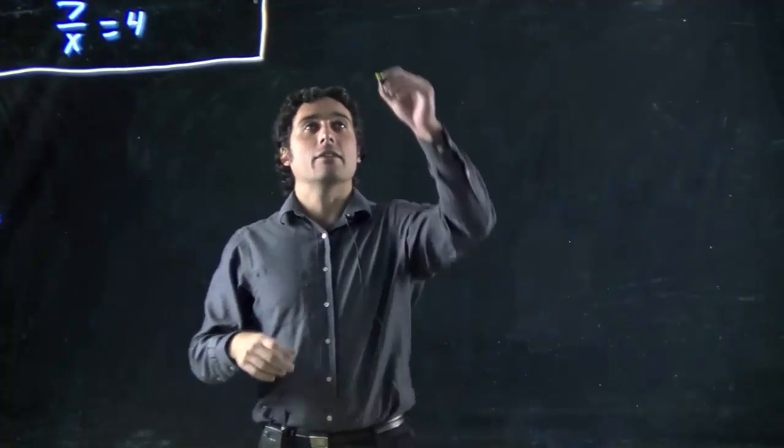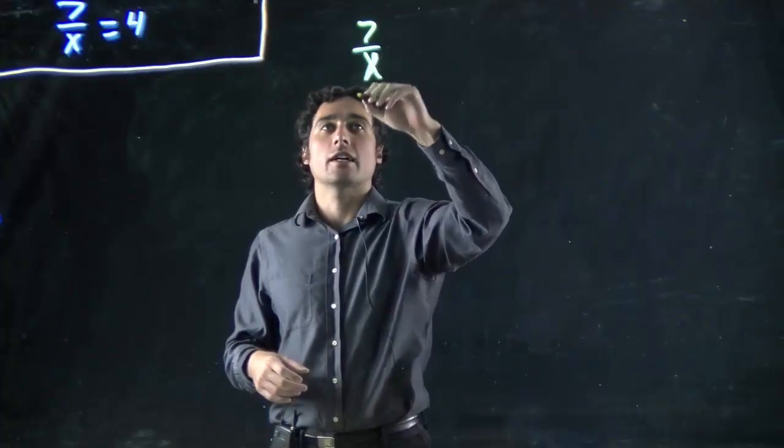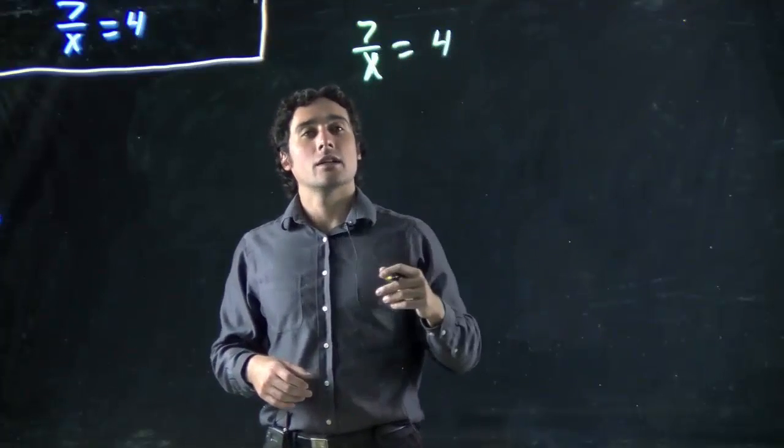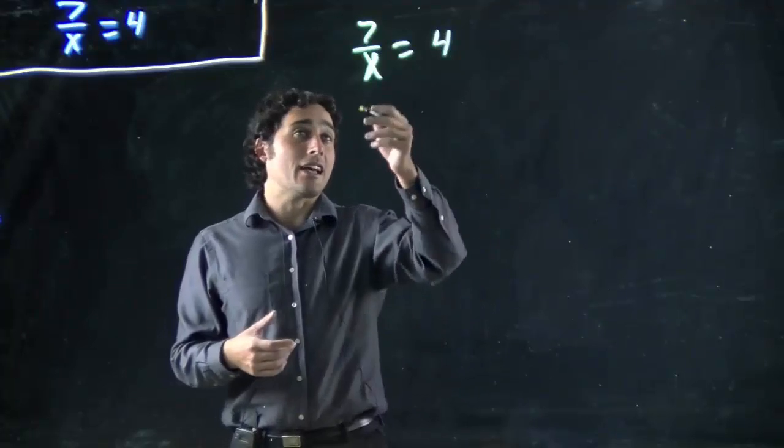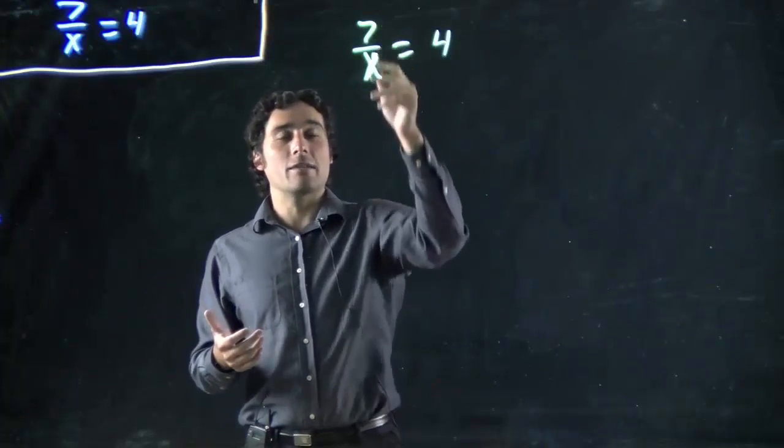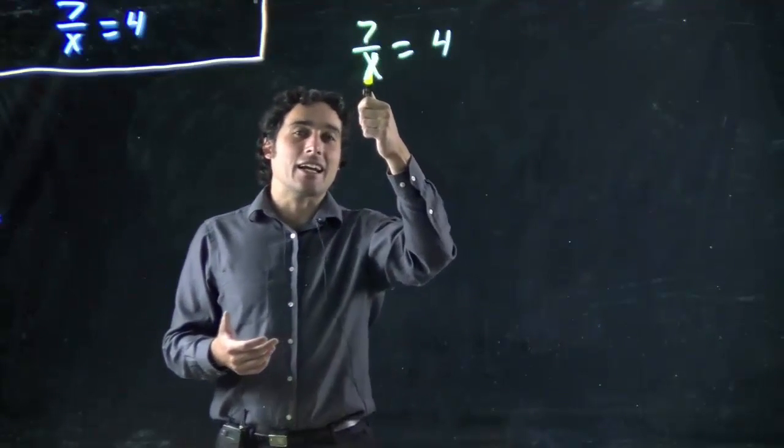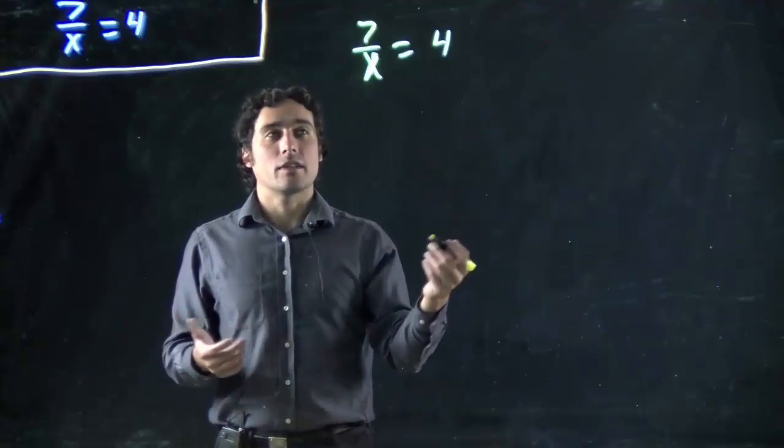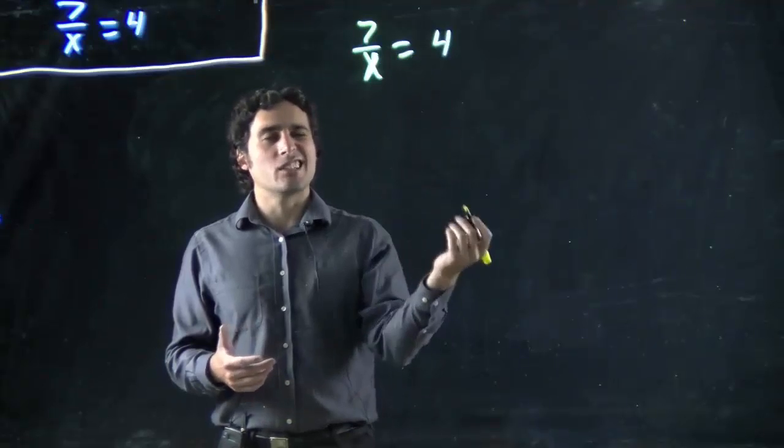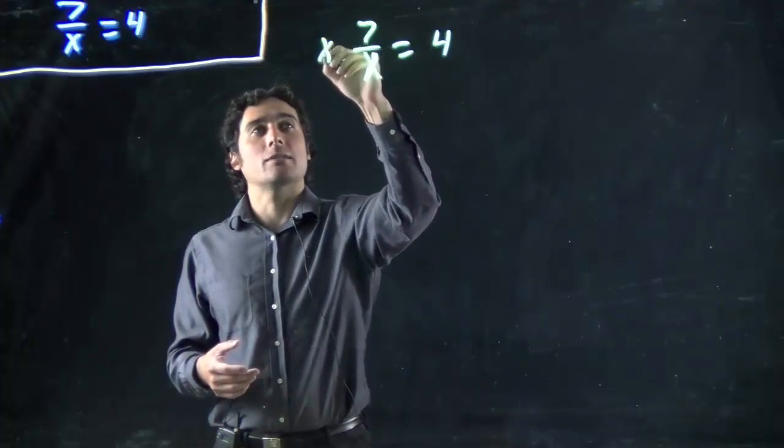We've got 7 over x, kind of an ugly looking x I've written there, but 7 over x equals 4. Well, one way is, again, we want to get x on its own. But if it's on the bottom, we can't get it on its own. If I divided both sides by 7, I'd still have a 1 up there, so it's not going to be on its own, meaning I've got to get x over. If I multiply both sides by x, it'll at least remove it from the bottom. It still won't be on its own, but I'm getting some progress. So I'm going to multiply both sides by x.